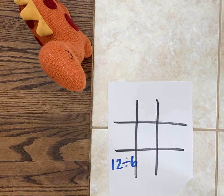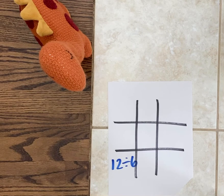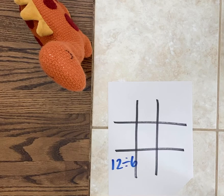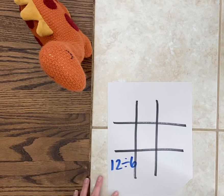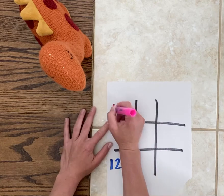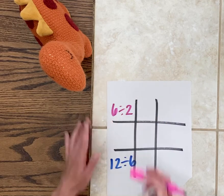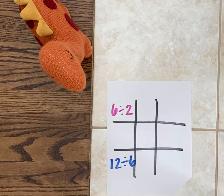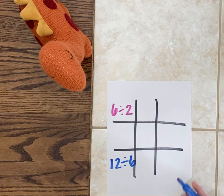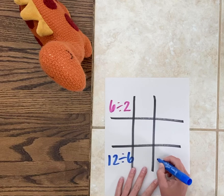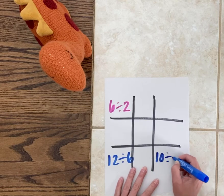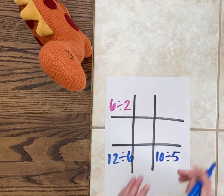Let's say dinosaur is going to go with a quotient of three. She's going to write out division problems where her answer is three. Dinosaur knows that if she does six divided by two, that is three, so she's going to go right there and take that spot. Now it's my turn — I'm going to take this spot over here. I know that 10 divided by five is two.